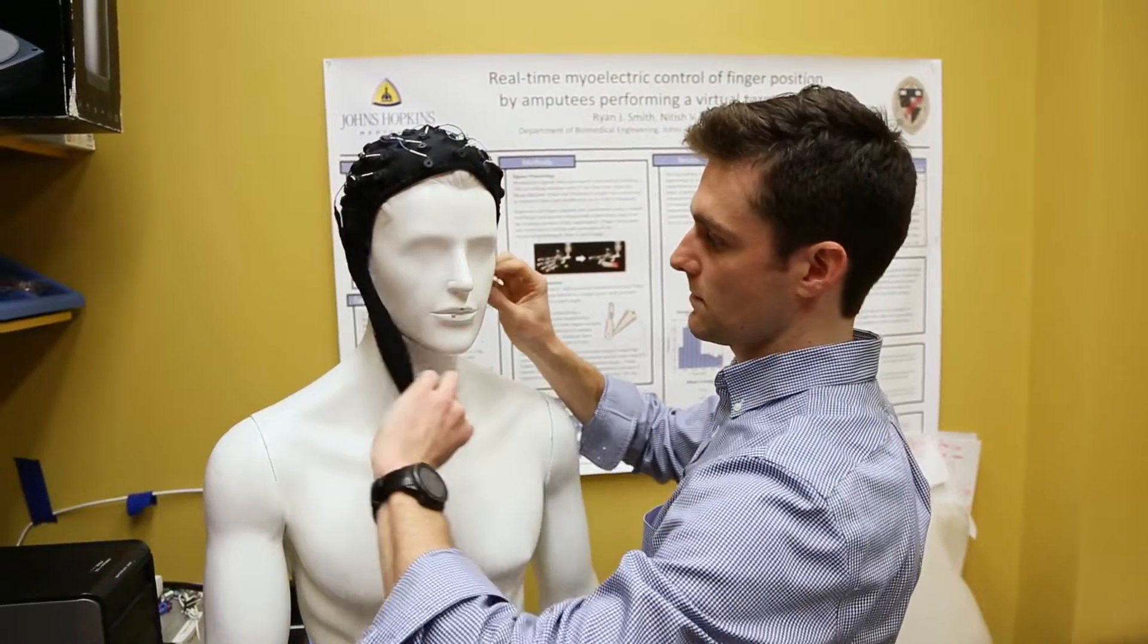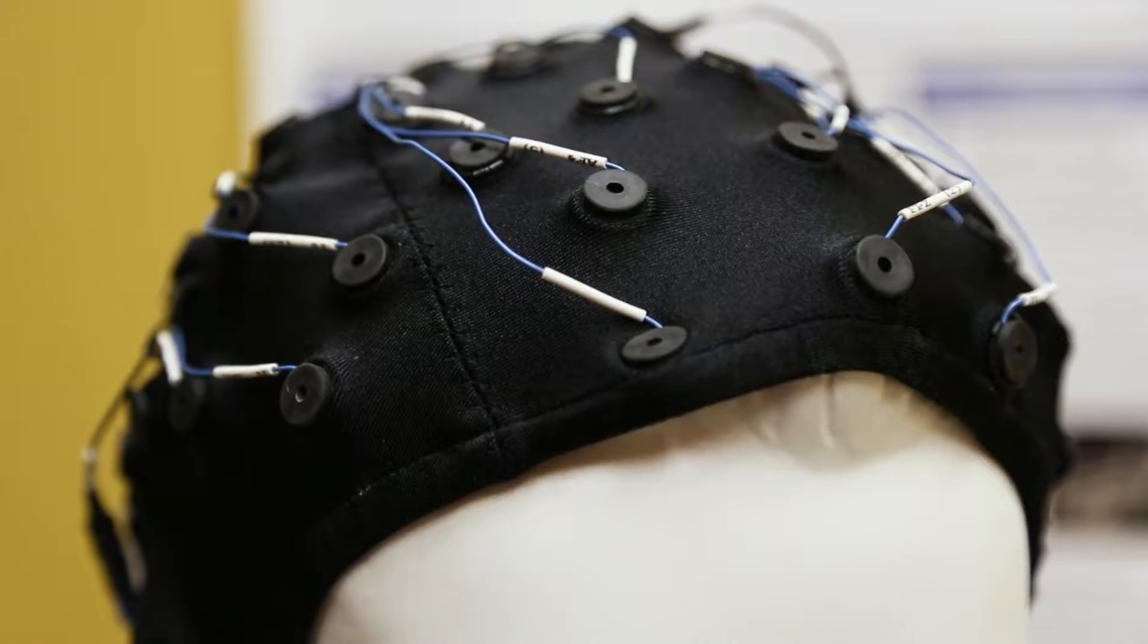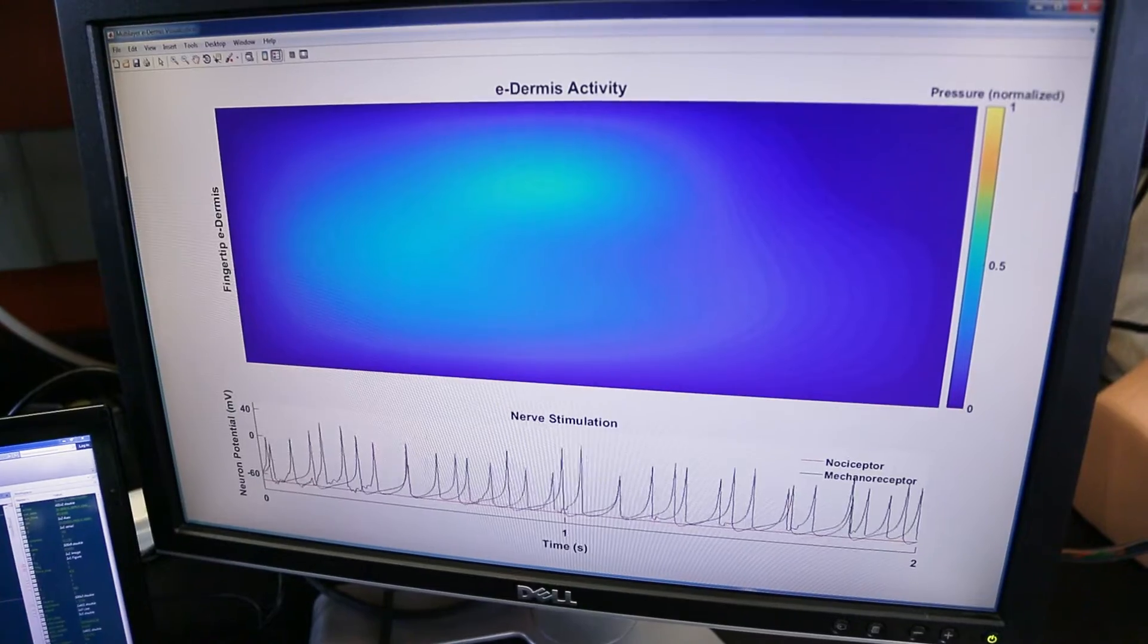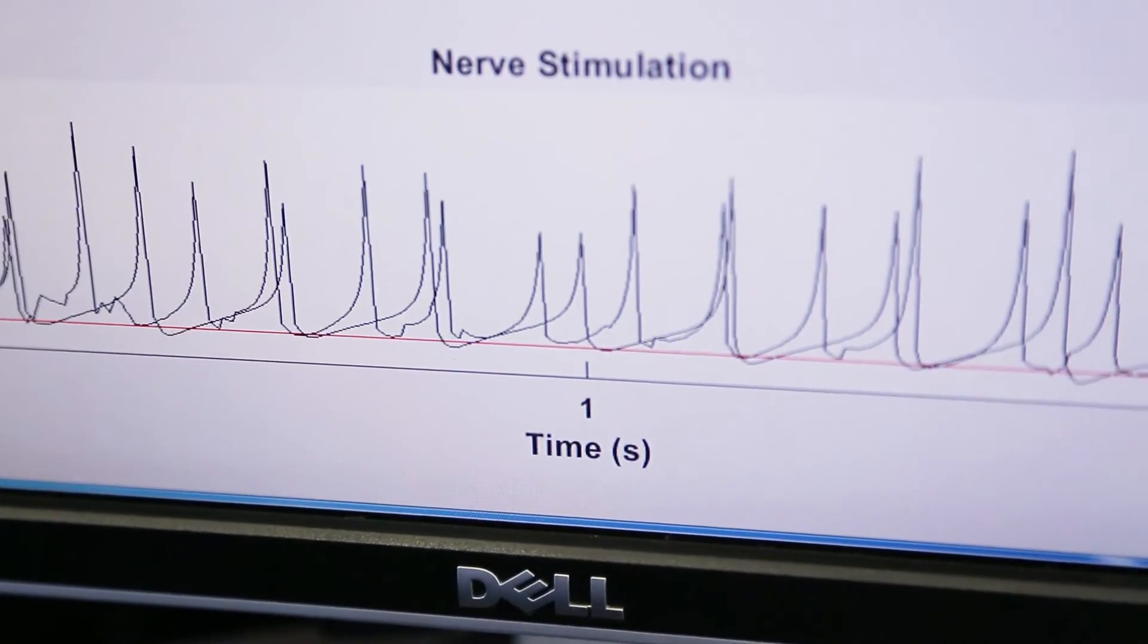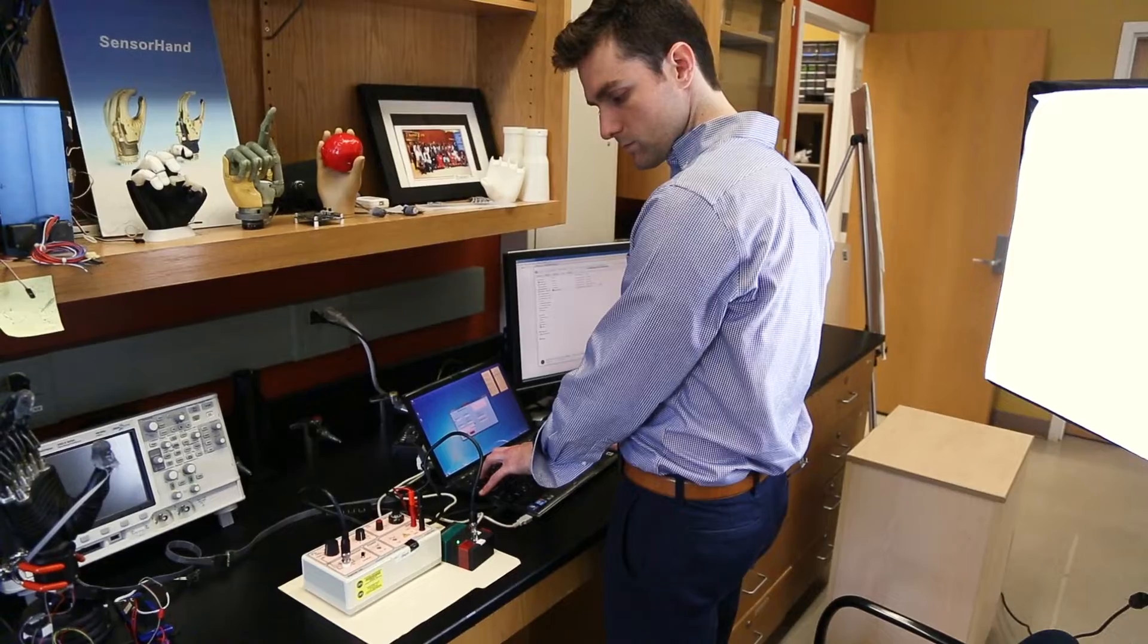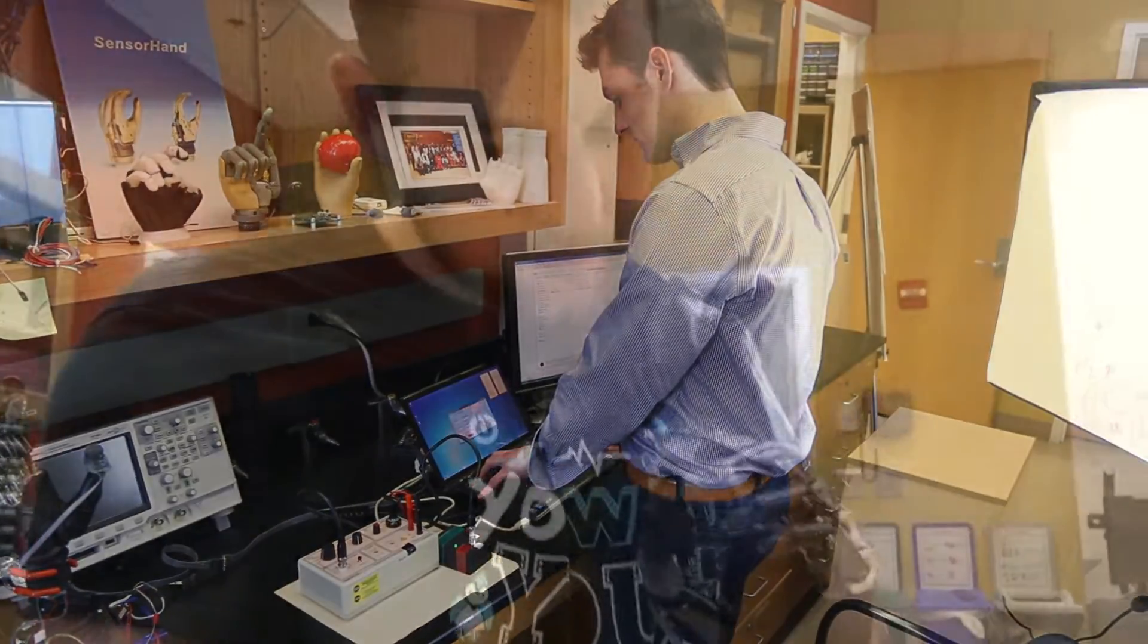With the sensory feedback we can provide natural sensations to the phantom hand of an amputee, and this is really important because it's taking one more step closer to having a lifelike upper limb prosthesis.